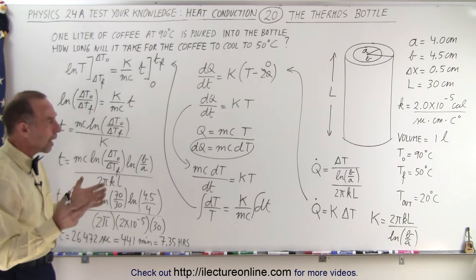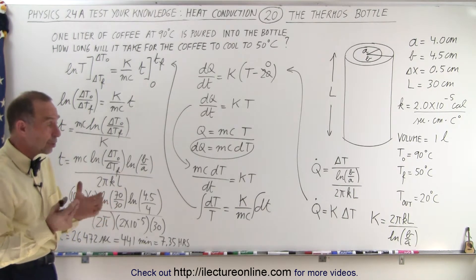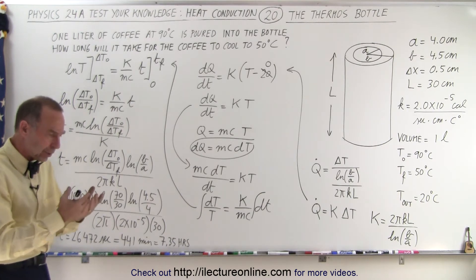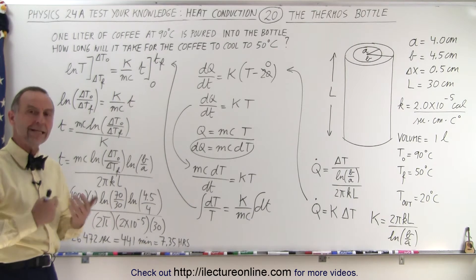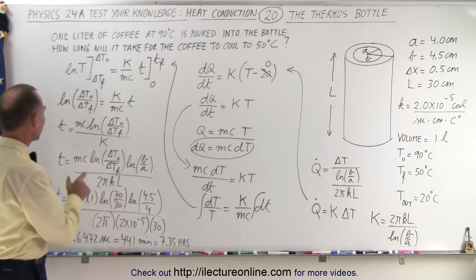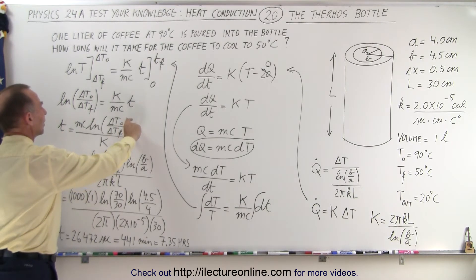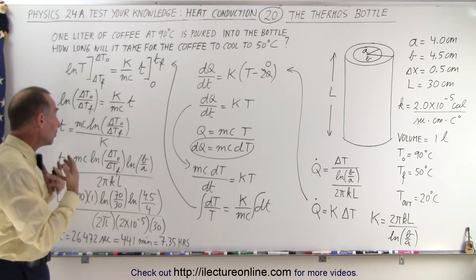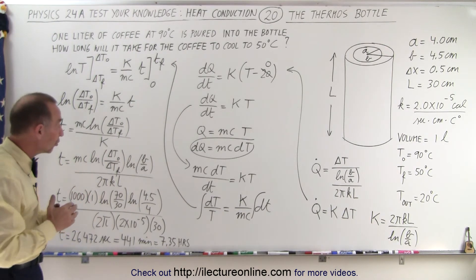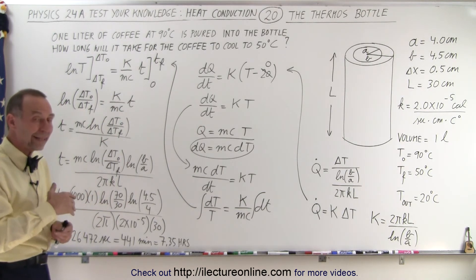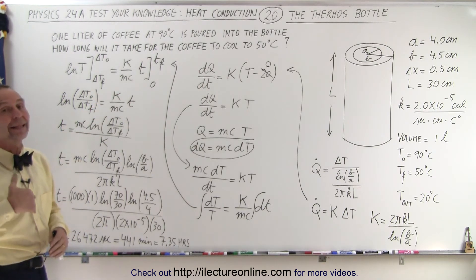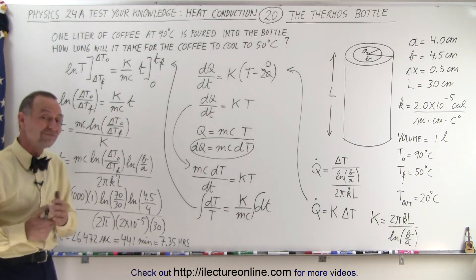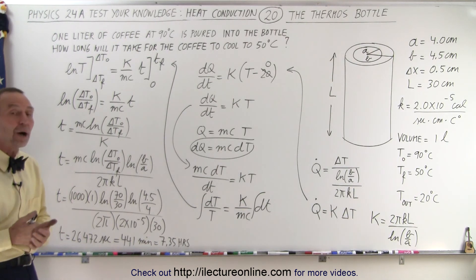Have you ever noticed that with thermos bottles, a hot liquid seems to cool down faster than a cold liquid heats up? It's all about the difference in temperature. If the temperature difference is very large, heat flow is large and the change happens faster. If the difference is very small, heat flow is slow and it takes longer. That's why things cool down faster — because the greater temperature difference drives faster heat flow — compared to heating up with a smaller temperature difference. A good thermos bottle should keep a liquid warm for at least 6 to 8 hours.